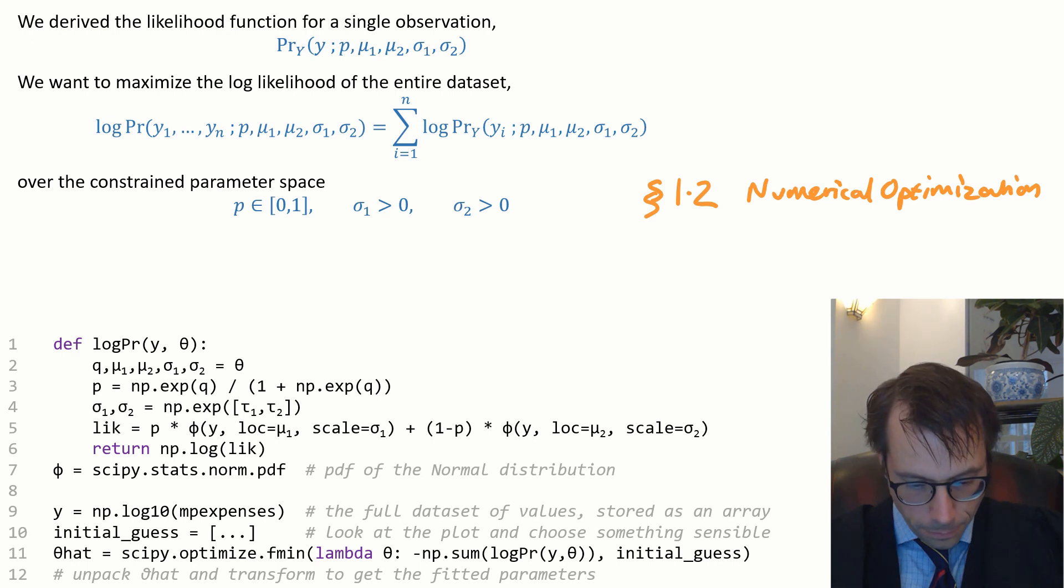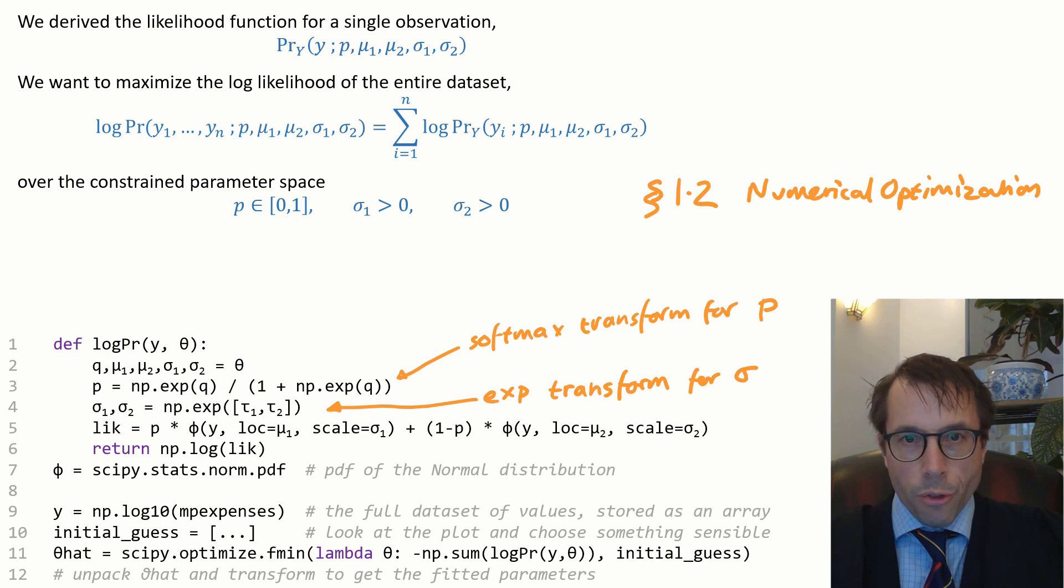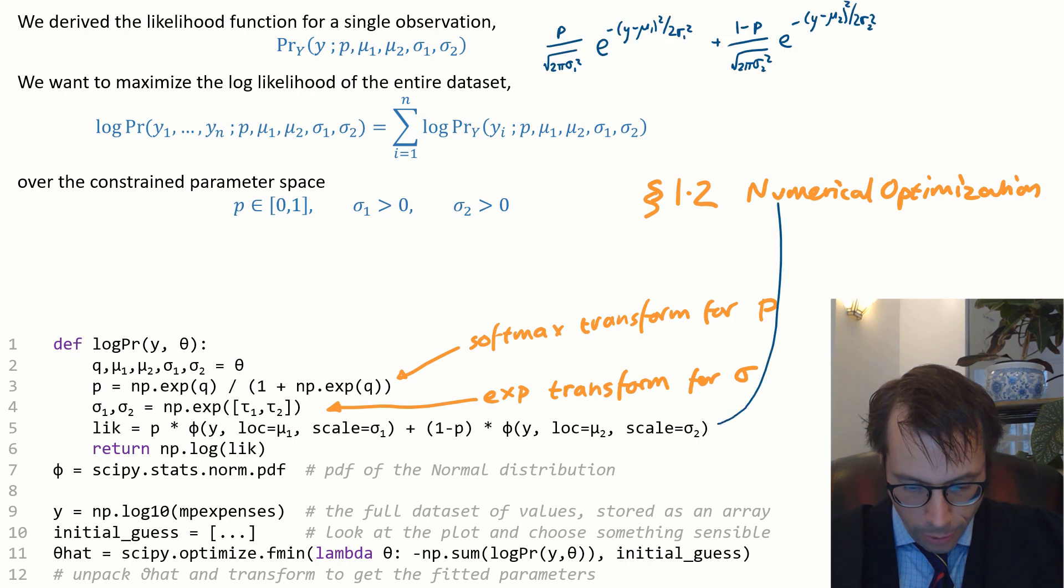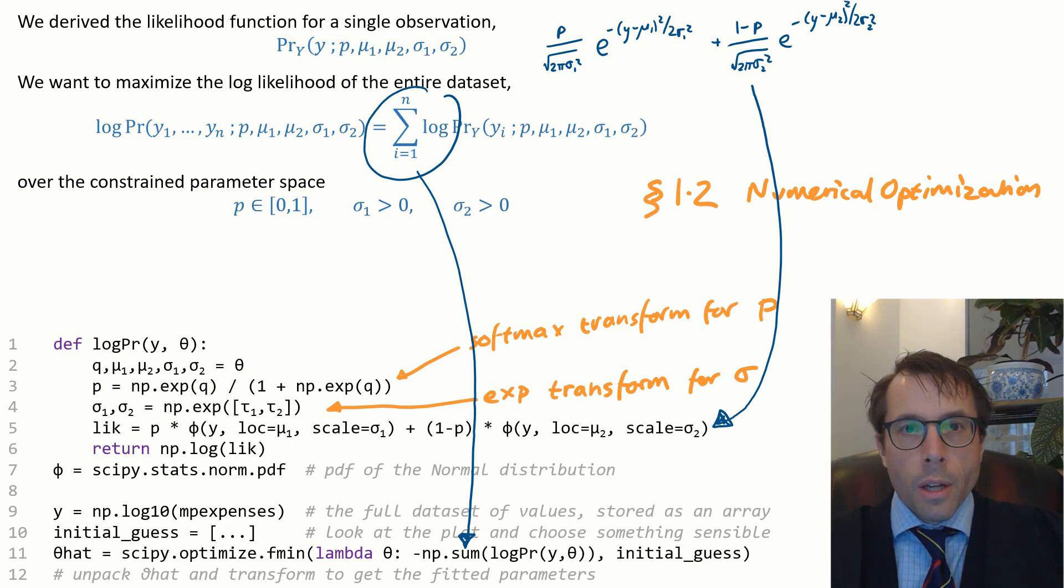Here's what the code looks like. What this code is doing is it's optimizing over transformed variables. Here I'm using a softmax transform for p to make sure p stays in the right range. And I'm using the exponential transform for sigma to make sure that sigma 1 and sigma 2 stay in their right range. The likelihood function on line 5 is exactly the formula that we got from the last page. And this is a generative model for a dataset. We need to fit the entire dataset. We need to sum up the log likelihoods. And that's what I do on line 11. This code uses numpy vectorized operations so that the log pr function automatically works happily over an array of y values.